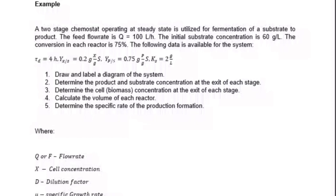Hi there and welcome back to this channel. Let us look at a chemostat example. We are told that a two-stage chemostat is operating at a steady state and is utilized for the fermentation of a substrate to product.